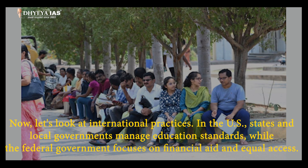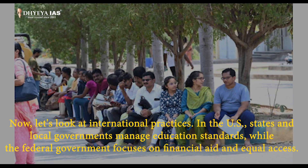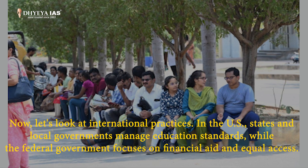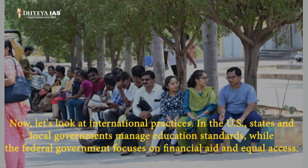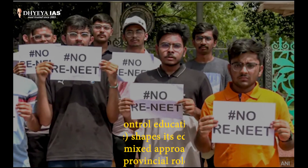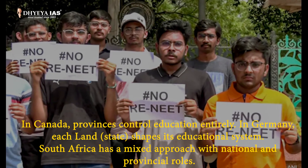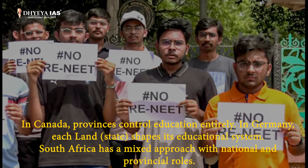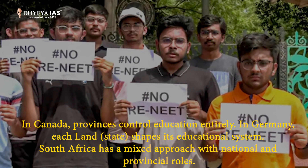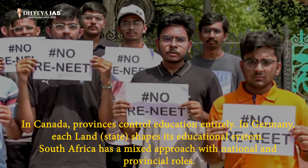Now let's look at international practices. In the US, states and local governments manage education standards, while the federal government focuses on financial aid and equal access. In Canada, provinces control education entirely. In Germany, each land-state shapes its educational system. South Africa has a mixed approach with national and provincial roles.